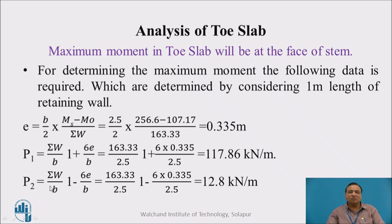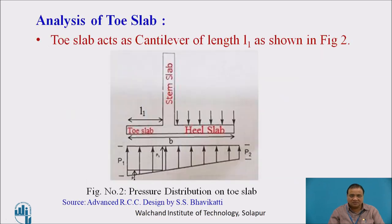Similarly, P2 is sigma W divided by B into 1 minus 6E by B, which works out to be 12.8 kilonewton per meter. All these forces are shown: P1 is here, P2 is here.